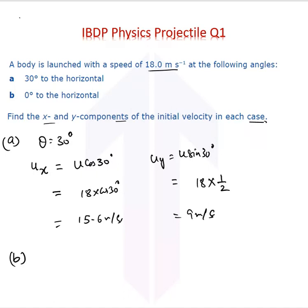In the second case, when theta is 0 degrees to the horizontal, there is no velocity along the vertical initially. Therefore, uy equals 0, and ux is just equal to the entire velocity, that is 18 meters per second. All the velocity is along the horizontal.